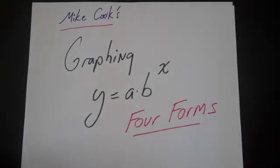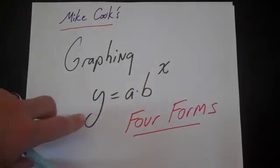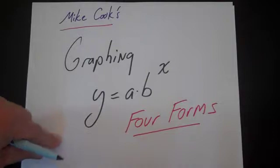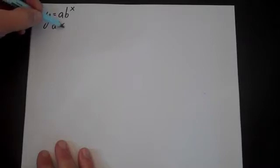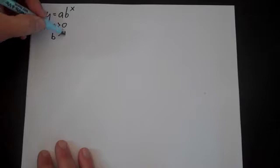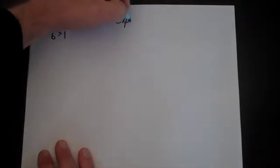Now let's look at graphing y equals a times b to the x. There are a variety of methods, and the way I do it is to first memorize four basic forms. The first case is y equals a times b to the x when a is positive and b is greater than 1. This is the classic exponential growth problem.